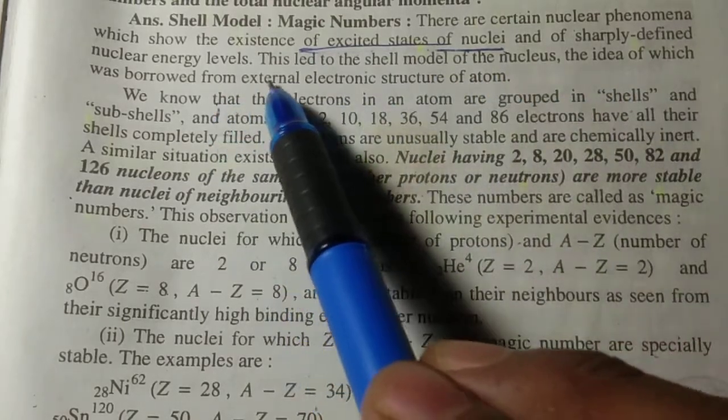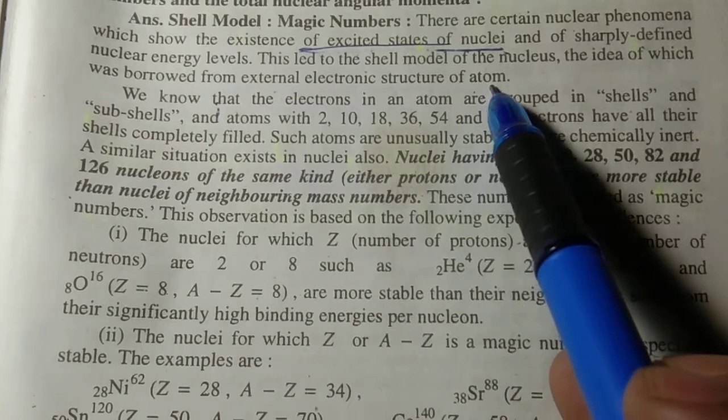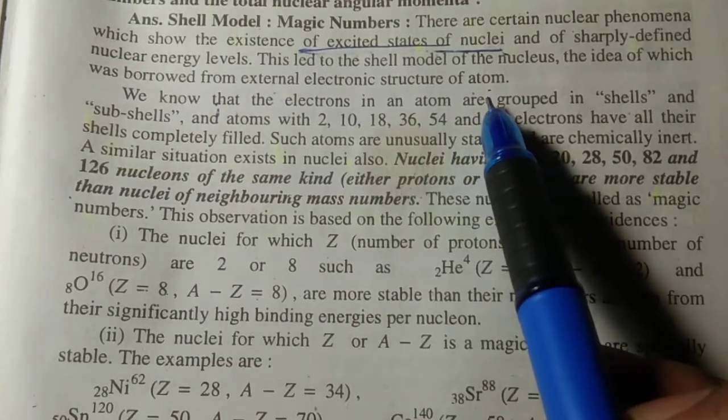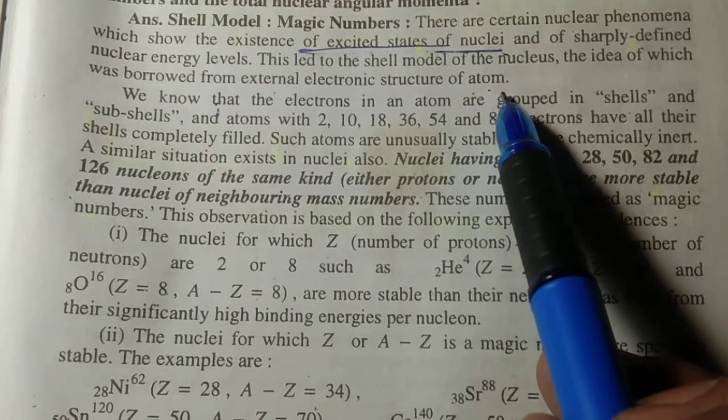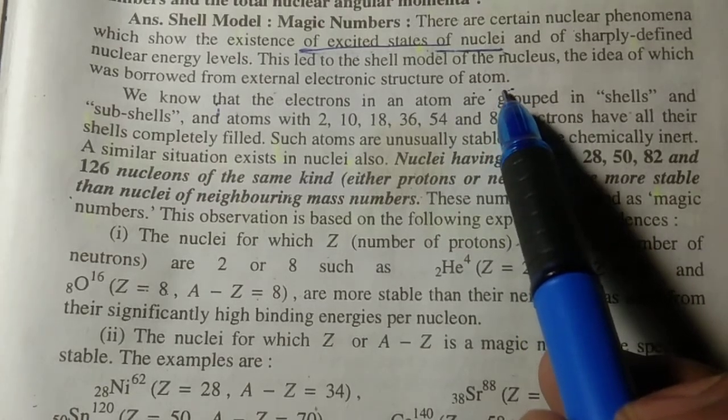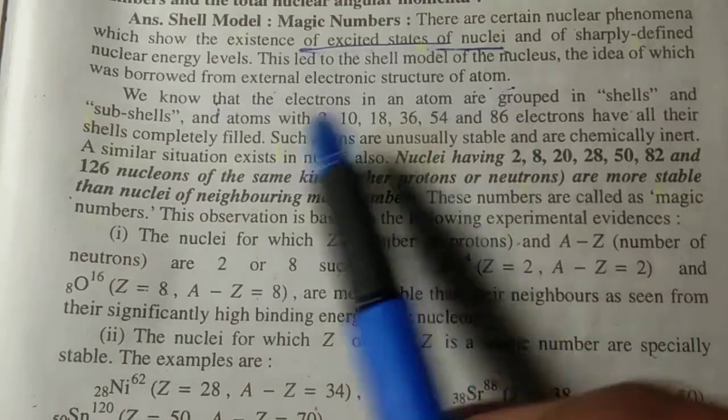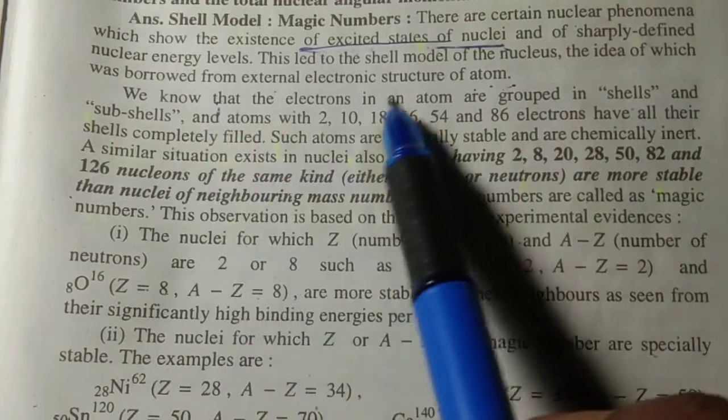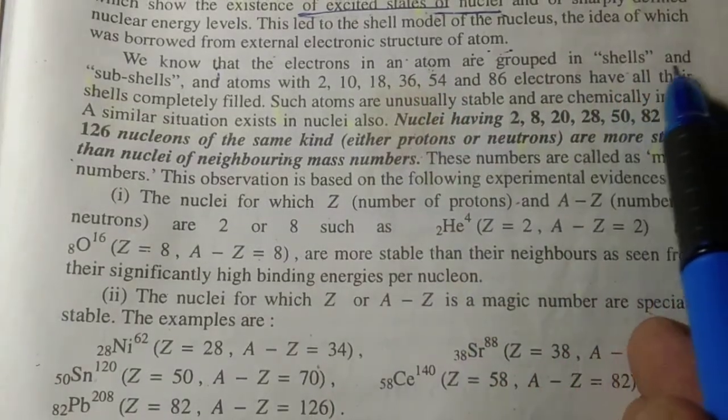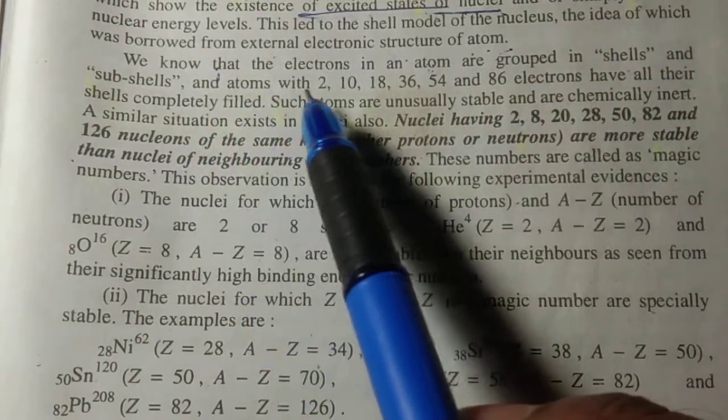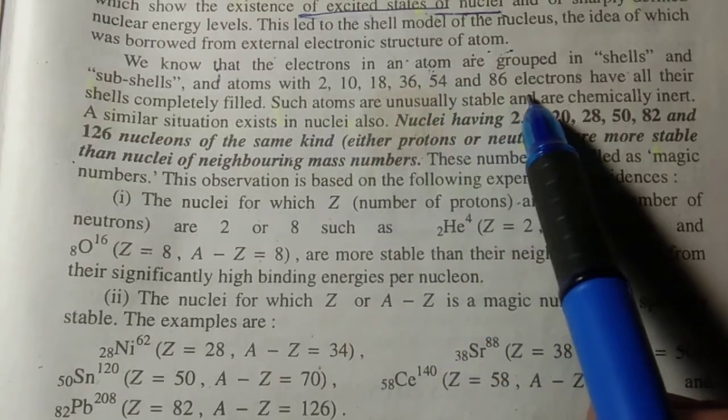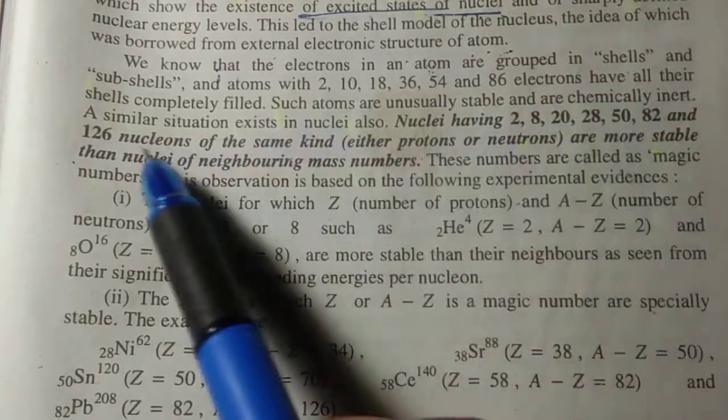We know that the electrons in an atom are grouped in shells and sub-shells, and atoms with 2, 10, 18, 36, 54, and 86 electrons have all their shells completely filled. Such atoms are unusually stable and are chemically inert.